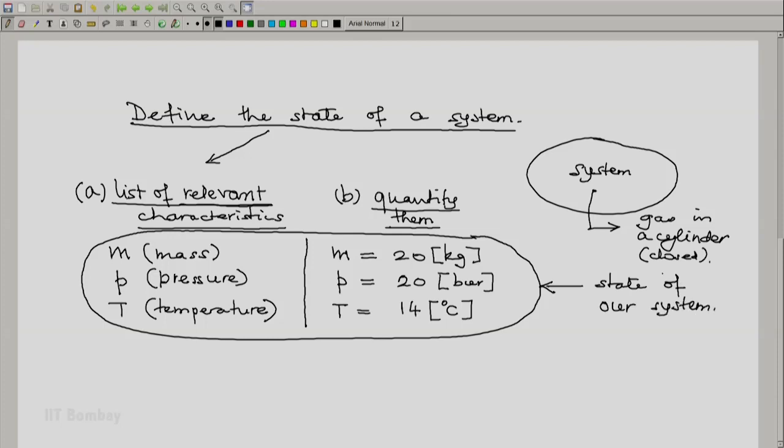And our system is this gas in the cylinder, mass 20 kg, pressure 20 bar, temperature 14 degree C. So we can say our system is gas with this symbolism: m = 20 kg, p = 20 bar, T = 14 degree C.